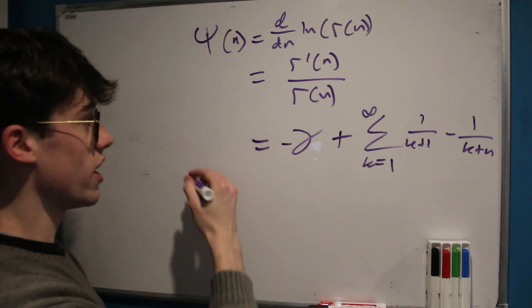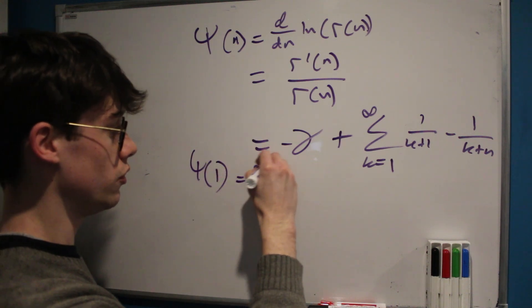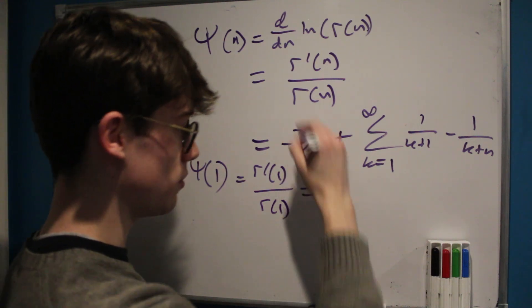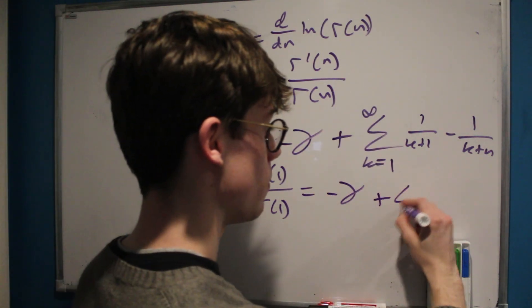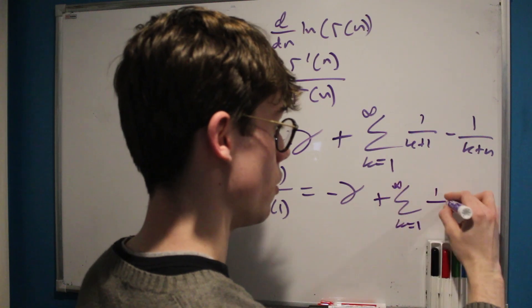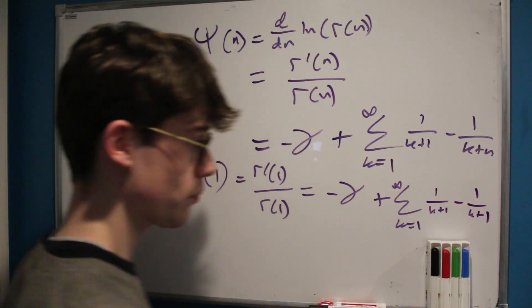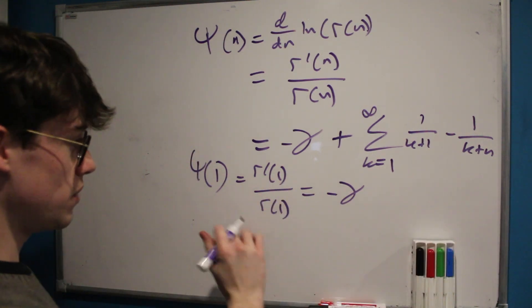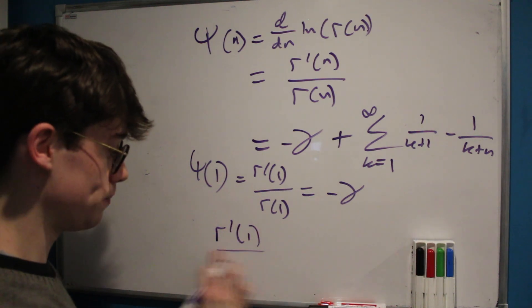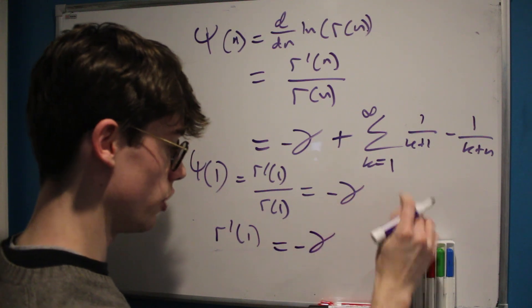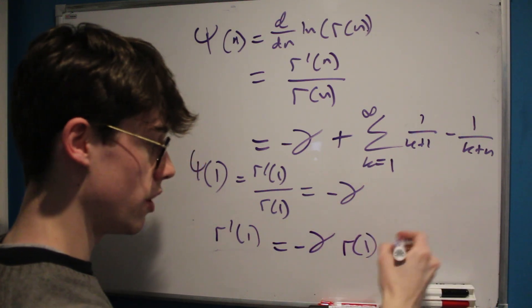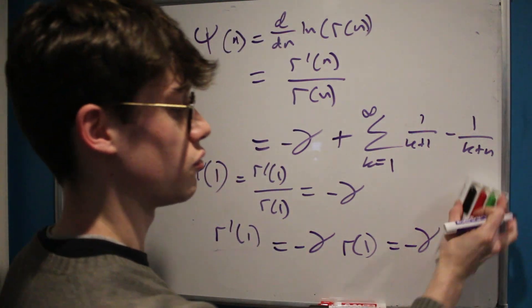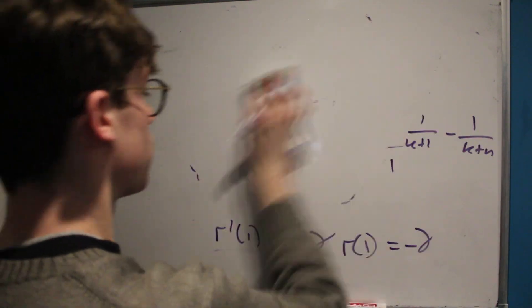The digamma function evaluated at one equals gamma prime of one divided by gamma of one. It also equals negative the Euler-Mascheroni constant plus the sum from k equals one to infinity of one over k plus one minus one over k plus one. Clearly one over k plus one minus one over k plus one is always zero, which means the derivative of the gamma function at one equals negative the Euler-Mascheroni constant multiplied by gamma of one — which is the same as negative the Euler-Mascheroni constant times zero factorial, which is one. So our answer is just negative the Euler-Mascheroni constant.